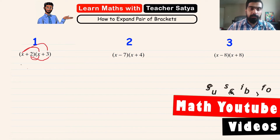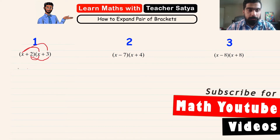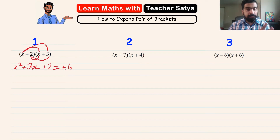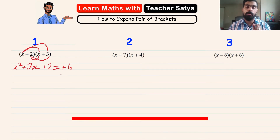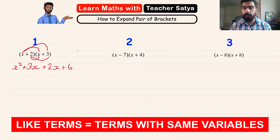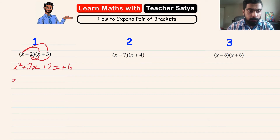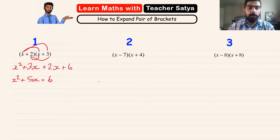Let's break these brackets. x times x gives us x squared, x times 3 gives us plus 3x. 2 times x gives us plus 2x, and 2 times 3 gives us plus 6. Now we look for like terms — terms with the same variables. 3x and 2x are like terms, so the final answer is x squared plus 5x plus 6.